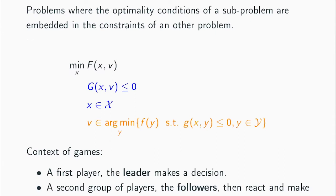Bi-level optimization — I mostly consider it as embedding optimization problems in other optimization problems, if you take a very generic formulation. From a gaming perspective, you can see it as sequential games, meaning that somebody is going to take a decision. In our case, this would be a so-called leader taking a decision X, and then a follower will react by taking a decision V in the follower problem, observing X and reacting to it optimally for them.